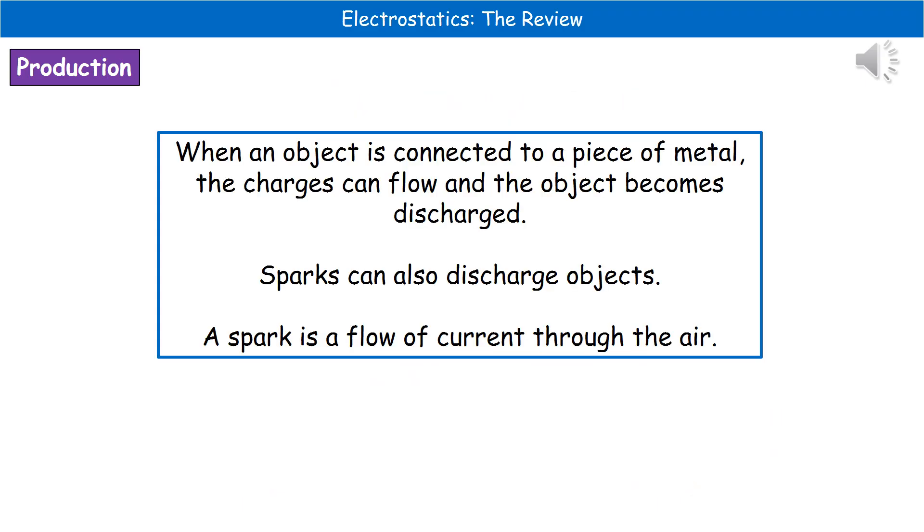When we've got a charged object, it will become discharged if we connect our object into a piece of metal. Because metals are conductors, the charges are free to flow and the object becomes discharged as a result.